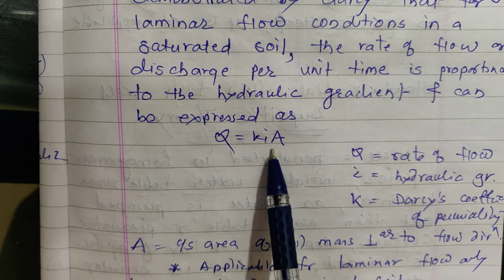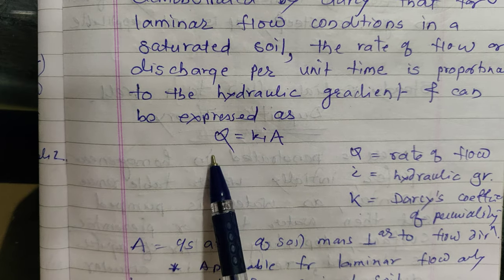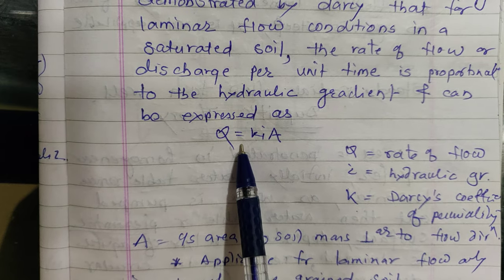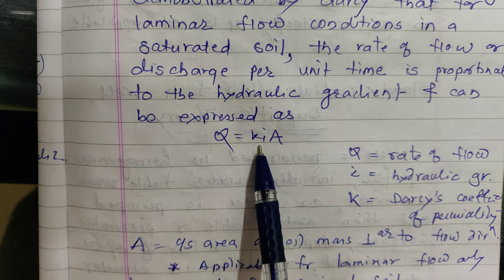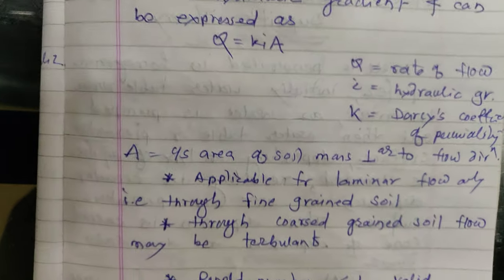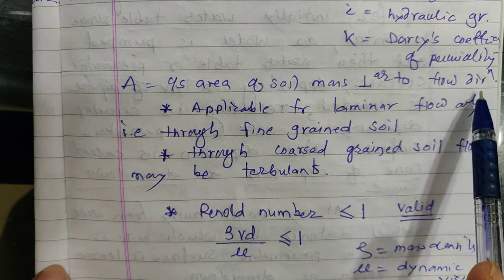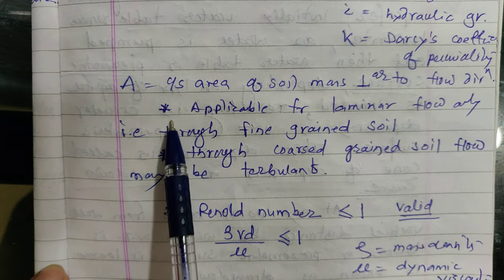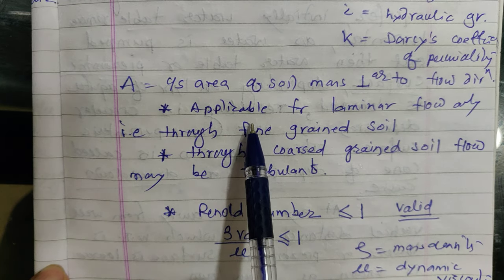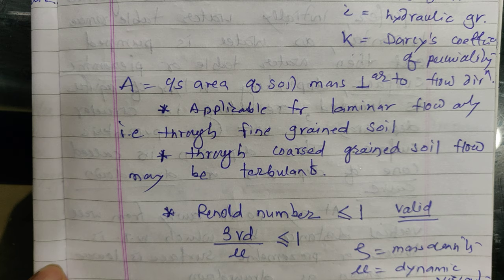Darcy's equation states: Q = k × i × A, where Q is the rate of flow, k is Darcy's coefficient of permeability, i is the hydraulic gradient, and A is the cross-sectional area perpendicular to the flow direction. This equation is applicable for laminar flow only.